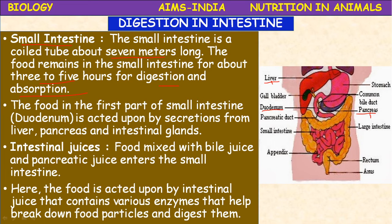The food is thoroughly mixed with bile juice and pancreatic juice. Along with that, the small intestine also releases enzymes in the form of intestinal juice, which also mixes with the food and the process of digestion takes place. That is why food retains in the small intestine for three to five hours, so that the chemical reactions of digestion take place in the presence of the enzymes in the digestive juices.